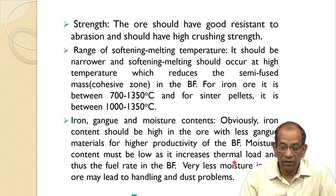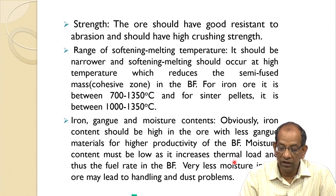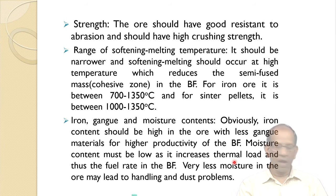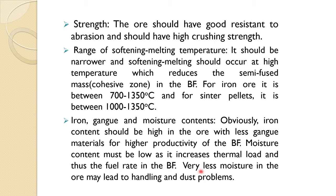The range of softening and melting temperature should be narrower, and softening and melting should occur at high temperature, which reduces the semi-fused heat mass — that is the cohesive zone — in the blast furnace. For iron ore it is between 700 to 1350°C, and for sintered pellets it is between 1000 to 1350°C. Iron content should be high with less gang material for higher productivity, and moisture content must be low as it increases thermal load and fuel rate. Very low moisture may lead to handling and dust problems.